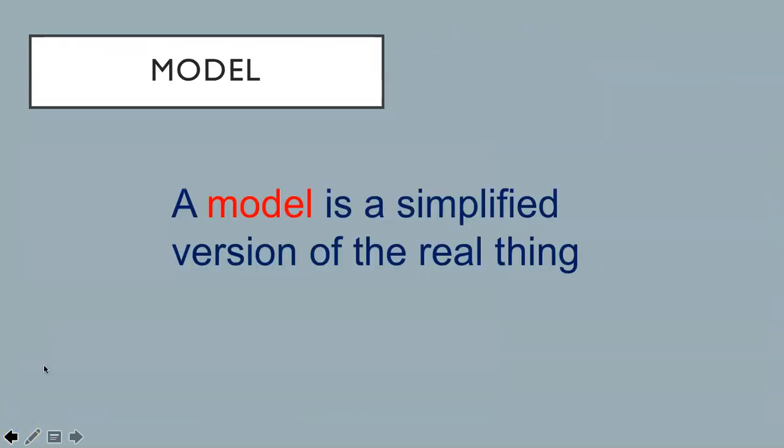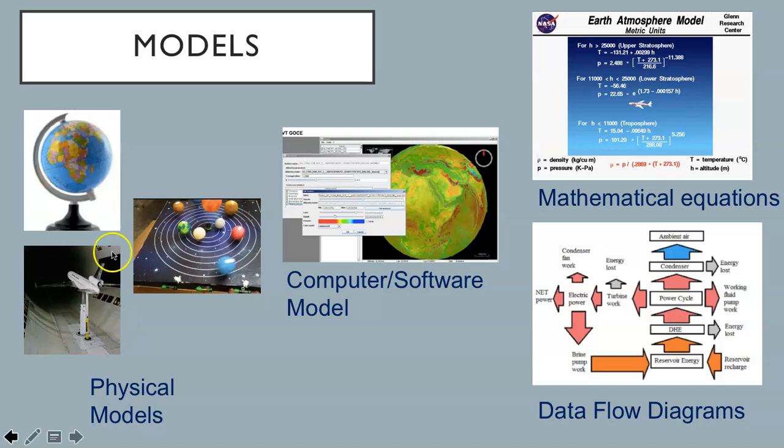A model is a simplified version of the real thing. Scientists use a variety of models to help understand how systems work, and to predict what happens if something changes. A model may take many forms. A model could be a physical model, like the globe, or a wind tunnel, or an aquarium, or a model of the solar system. Or a model can be a computer or software model, like this model of the Earth. There are mathematical models as well as data flow models. You will be using all kinds of models in ESS.